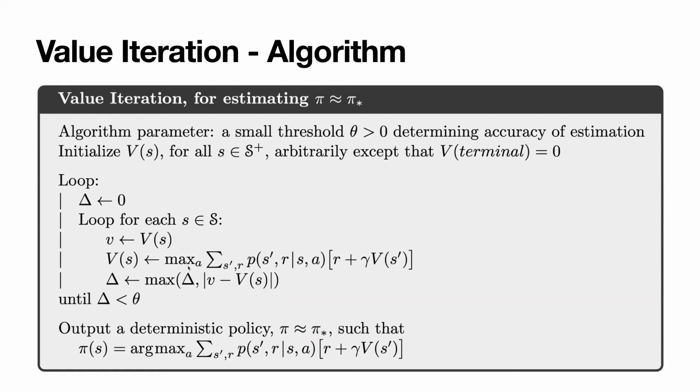we select the maximum value that we can achieve. In this way, for this particular state, we update the value with the new one. Then we compute the difference between old values and newly computed values to decide whether we should stop. This algorithm outputs a deterministic policy such that policy or what should we do in each state is action that maximizes this condition.